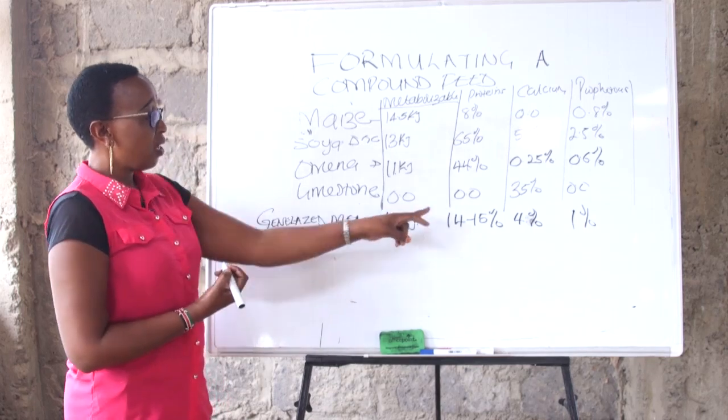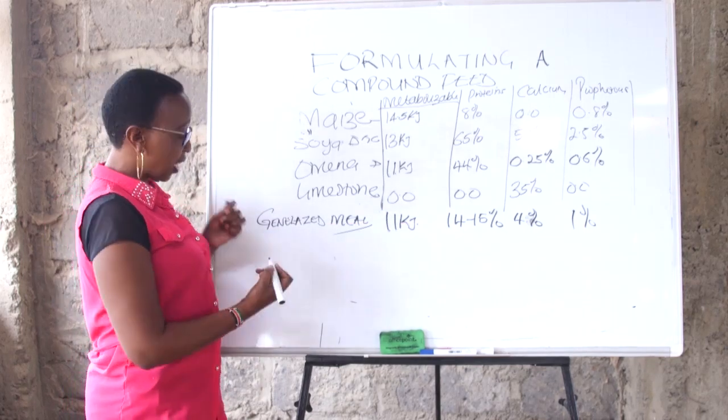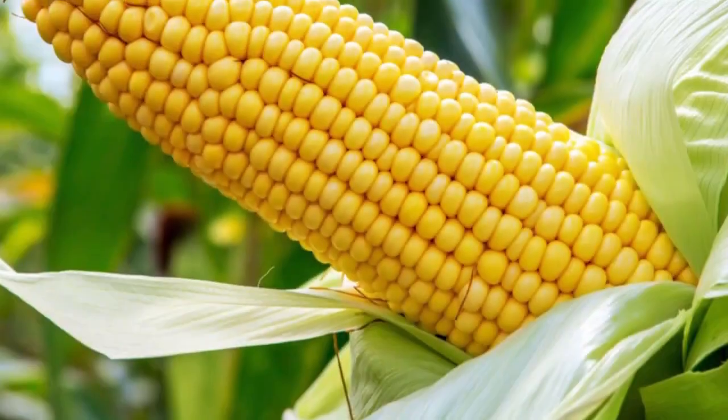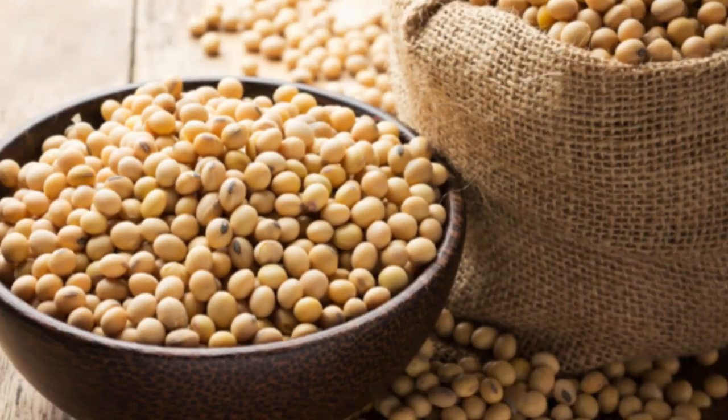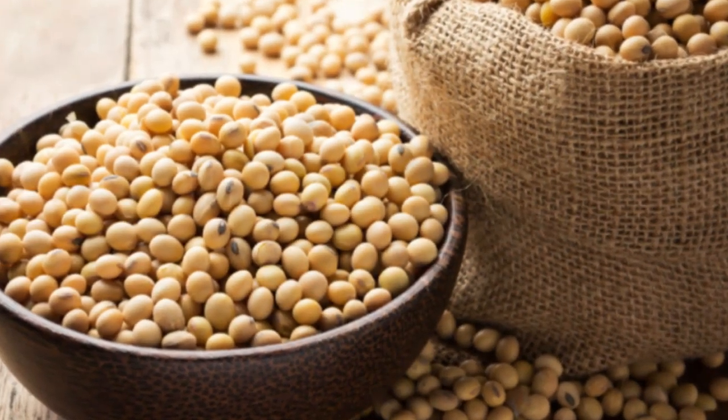So if we just need 14 to 15 percent, we can start with: we have maize, we have our soya, we have our manna, and we have lime.